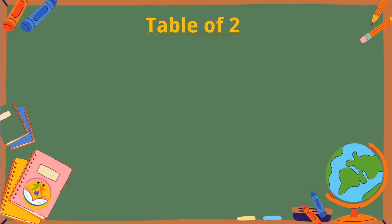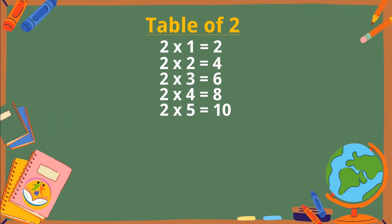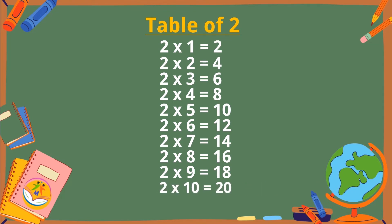Table of 2. 2×1 is 2, 2×2 is 4, 2×3 is 6, 2×4 is 8, 2×5 is 10, 2×6 is 12, 2×7 is 14, 2×8 is 16, 2×9 is 18, 2×10 is 20.